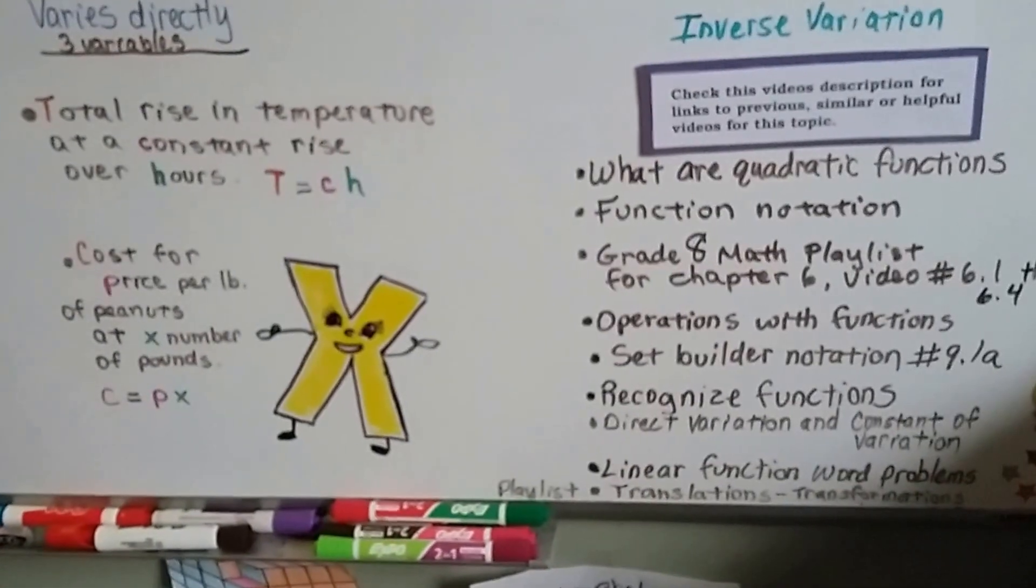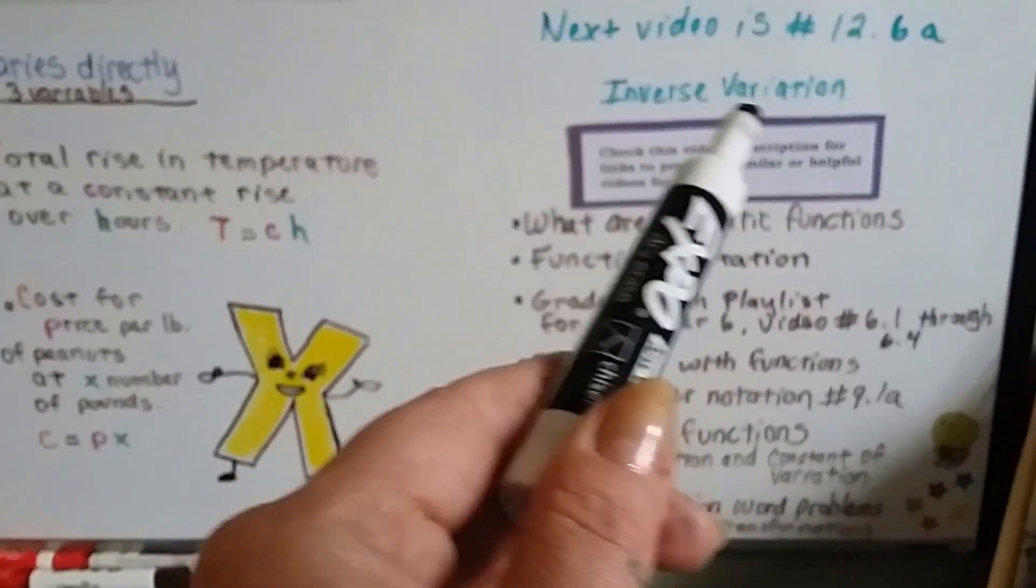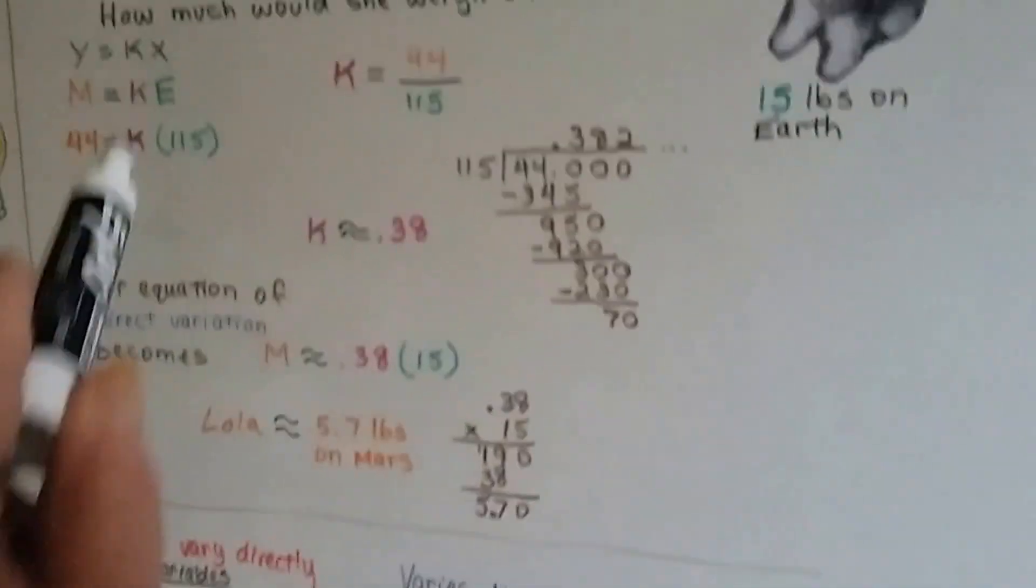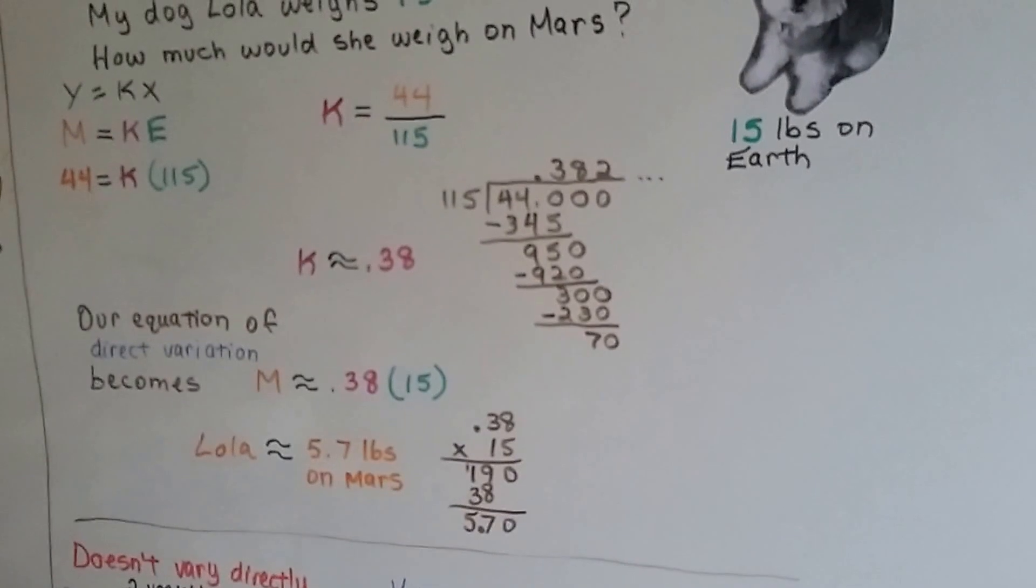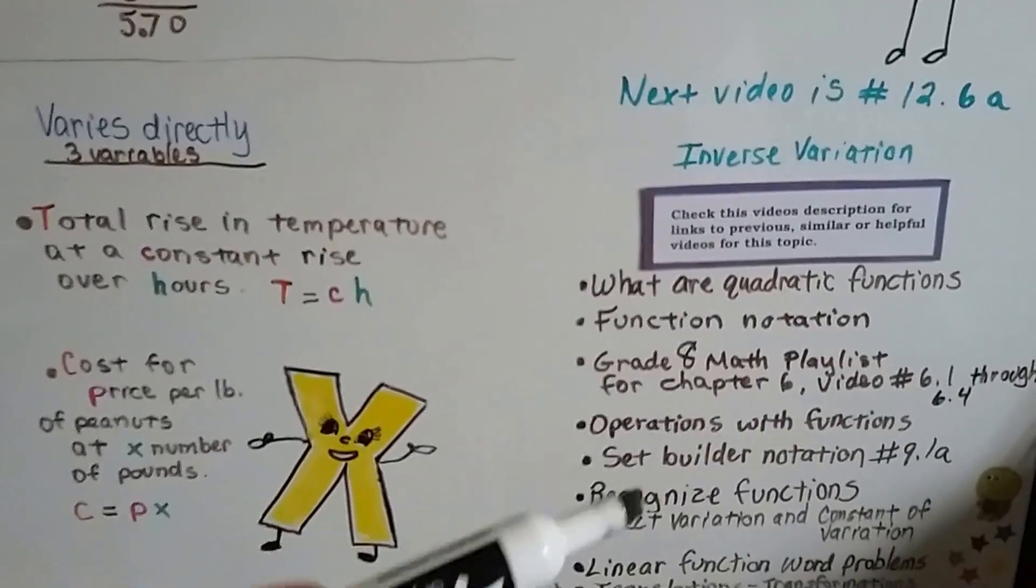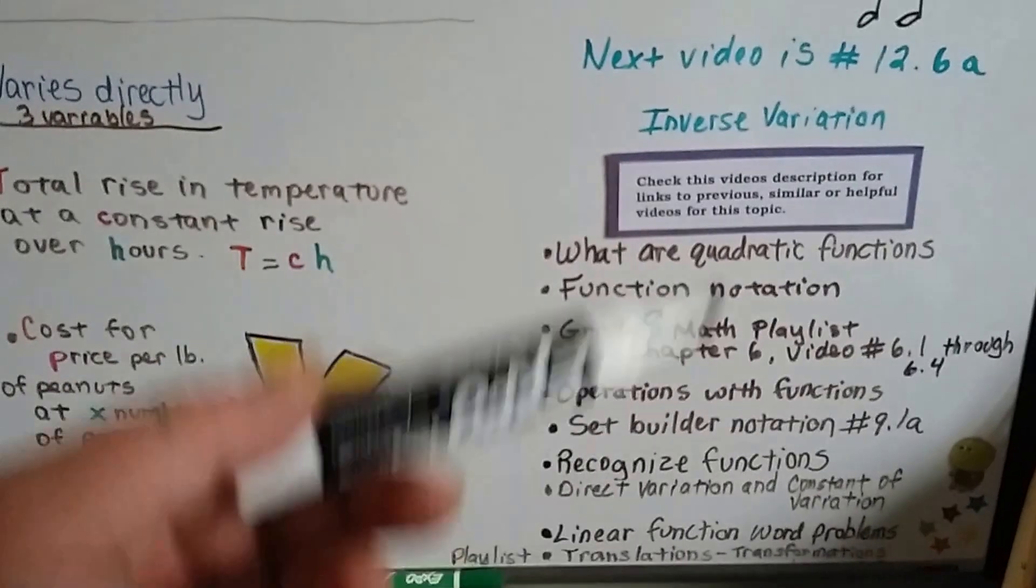This will make sense if you just stop and think about it for a second. Because these have two variables and these have three. Our next video is going to be 12.6a. We're going to talk about inverse variation. We're actually going to spin this around, spin this equation around that y equals kx. Any of the other videos that are similar or the previous videos, helpful videos, are going to be in this video's description. You can just click on them real quick and look through the list.